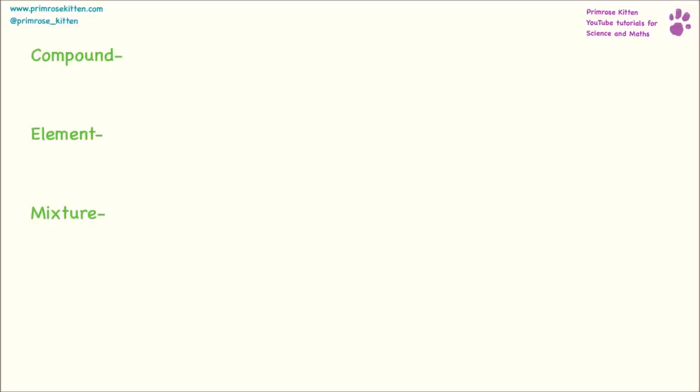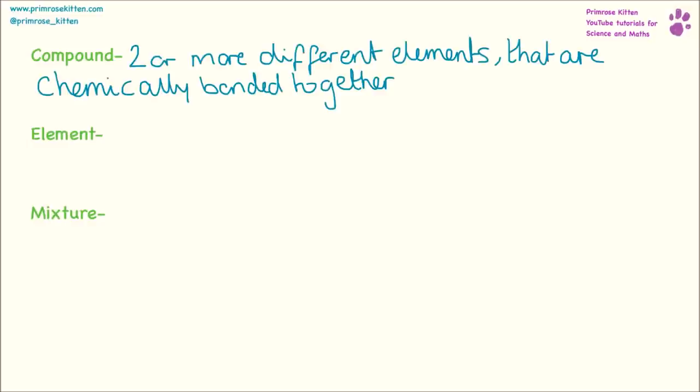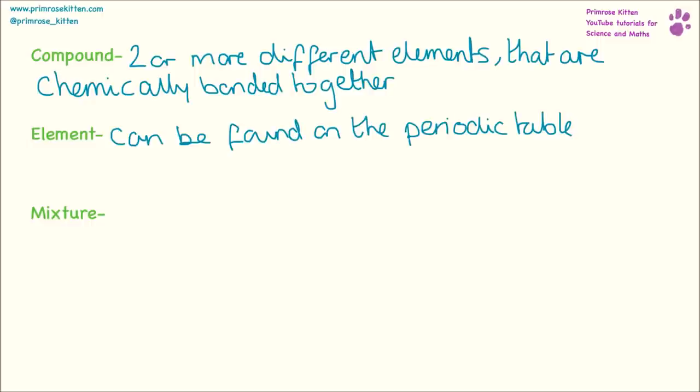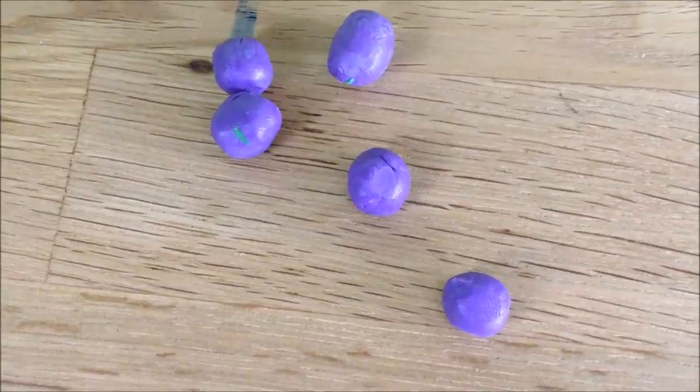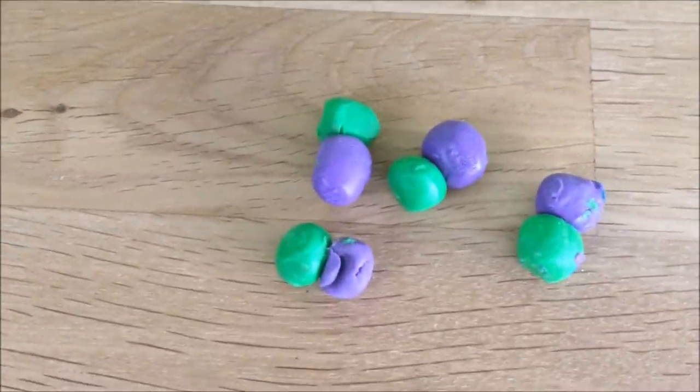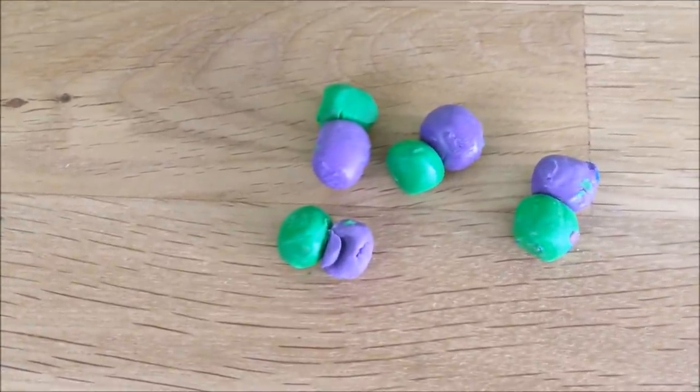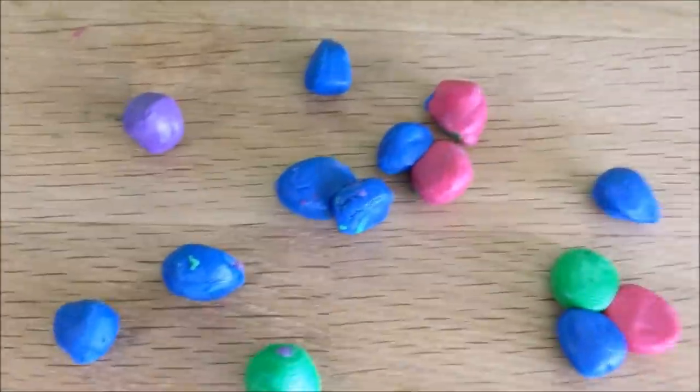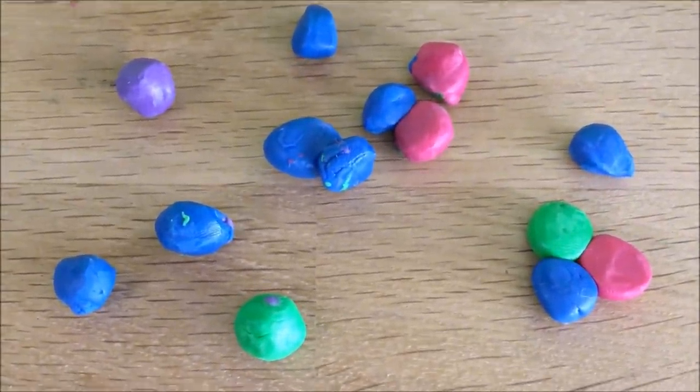You need to know what an element, compound, and mixture is. A compound is two or more different elements that are chemically bonded together. An element is something that can be found on the periodic table. A mixture is going to be two or more, possibly lots of things that are all mixed together. They could be chemically bonded, they could not be chemically bonded. Elements are pure things, compounds are two or more different things chemically bonded together. A mixture is lots of different things, some chemically bonded, some not.